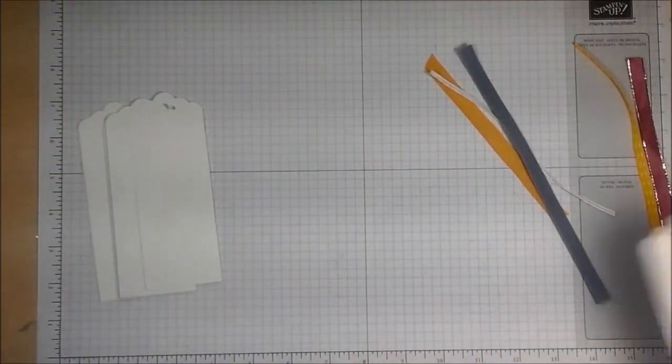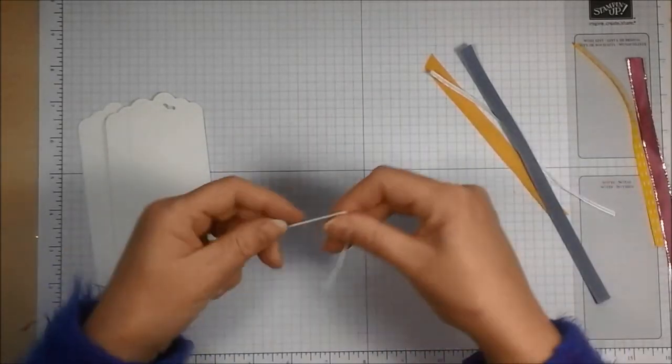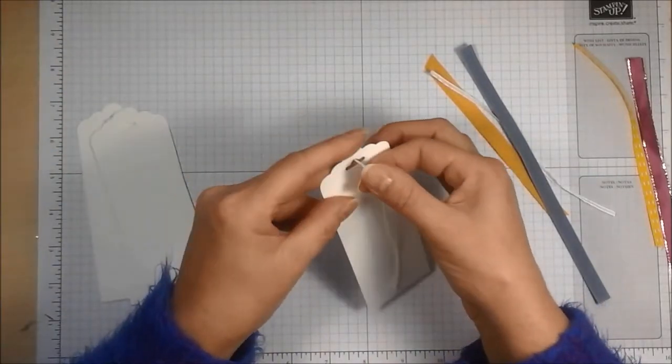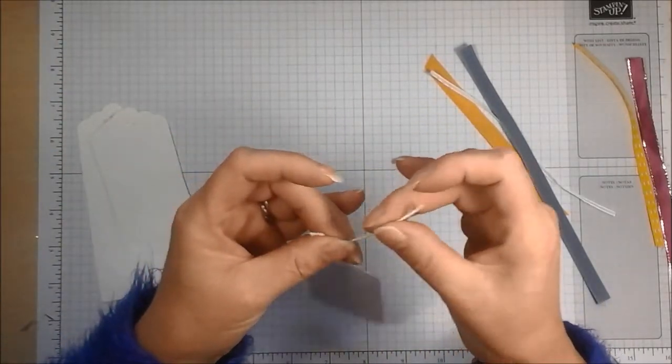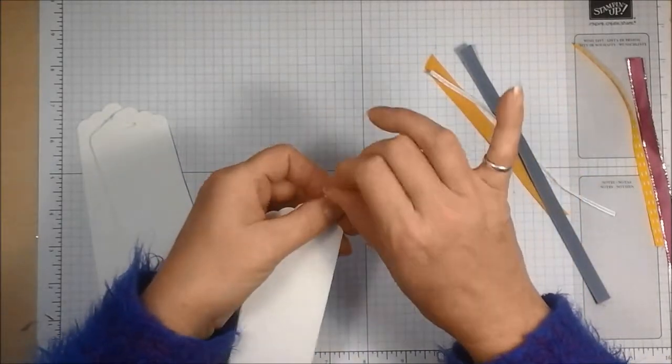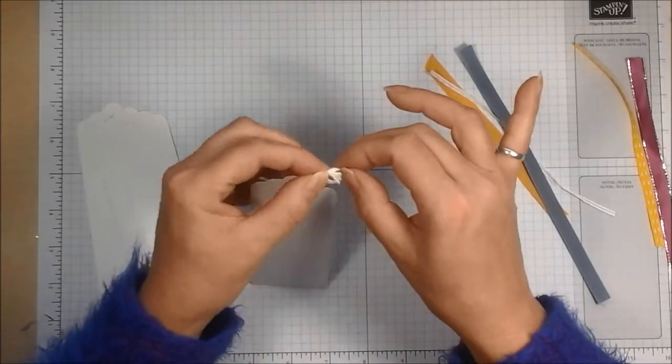But one of the problems with that is it tends to wobble around and the tag will end up all over the place. So what you can do is take, when you take your twine and put it through, tie your knot at the end as I did before,